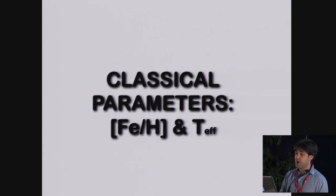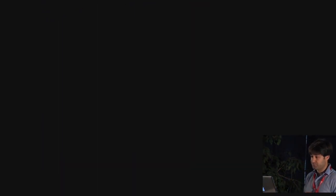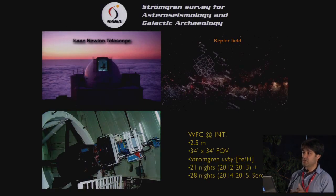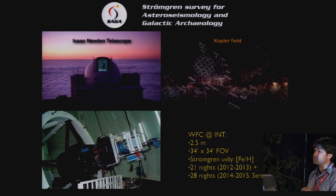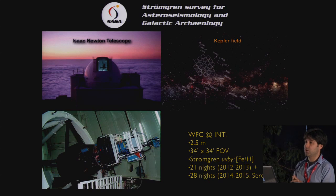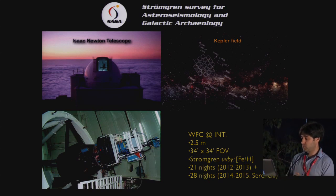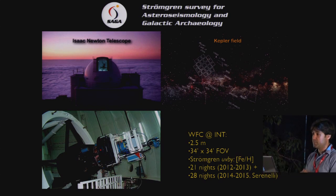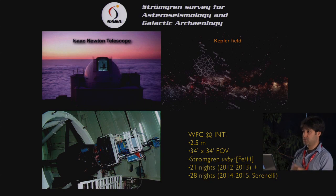So with this purpose in mind, we started the SAGA survey. So the SAGA survey, essentially the point here is to get Stromgren photometry for stars in the Kepler field. And Stromgren is a really powerful system because it really tells you the basic stellar parameters that you are after. And we got some 20 nights on the INT telescope in La Palma and more nights are going to be over the next two years.